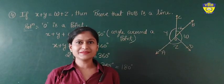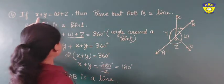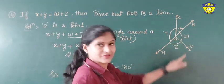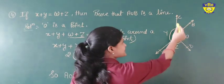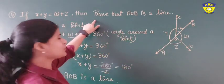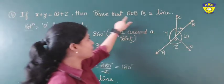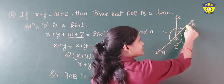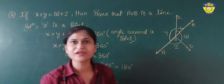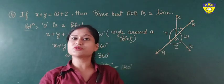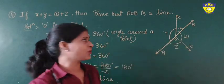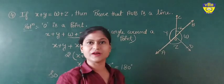In the next question it is given that x plus y is equal to w plus z. Here is the figure. So x plus y is equal to w plus z. Now you have to prove that AOB is a line. For proving AOB is a line, you need to prove that x plus y should be 180 degrees, or w plus z angle should be 180 degrees.